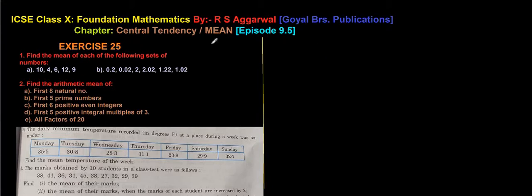All questions are related to Mean, and in Mean we have seen all three methods: direct method, step deviation method, and shortcut method. These are all related to grouped data. The ungrouped data formula is very simple: x̄ = Σxᵢ / n.